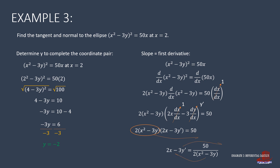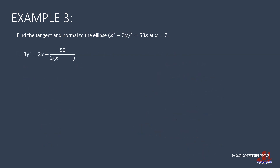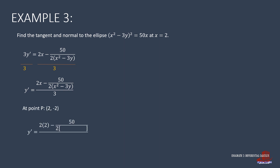Rather than expanding, we move other terms to the right: 2x minus 3y prime equals 50 divided by 2(x squared minus 3y). Transposing, we isolate y prime by dividing everything by 3. Plugging coordinates (2, -2) into the resulting equation gives y prime equal to one half. This is the slope.